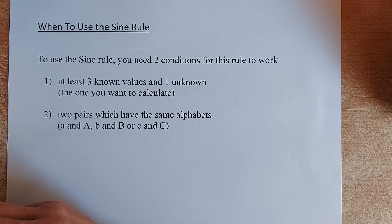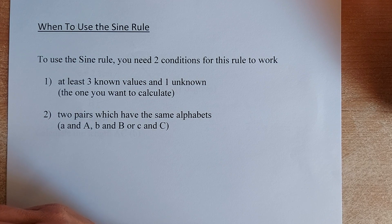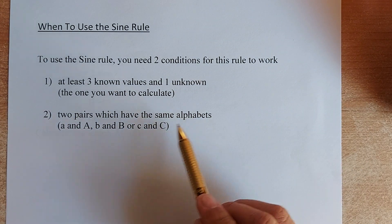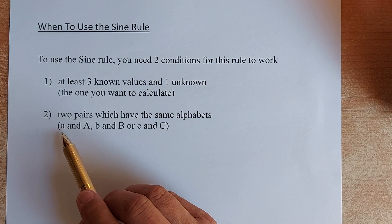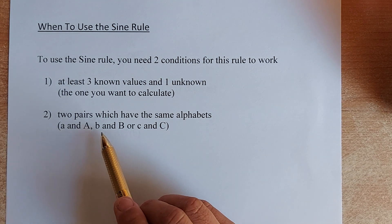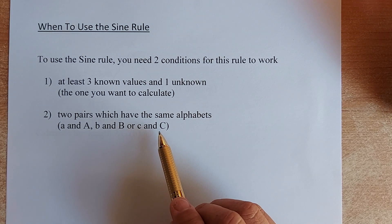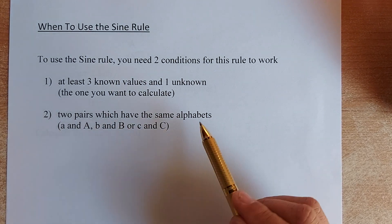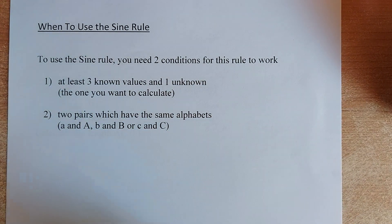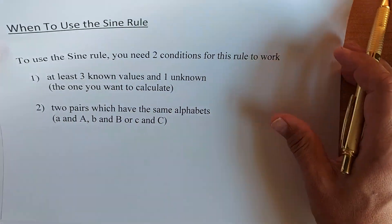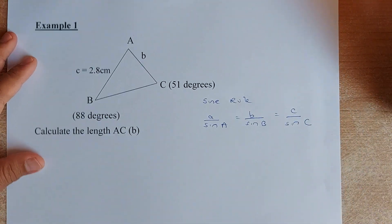If you are given less than three, means you got one or two, you cannot use the sine rule. And the second thing, two pairs must have the same alphabet. It could be lowercase a and angle A, lowercase b and angle B, or lowercase c and angle C. Two of them must play a part. One of them can be deleted.